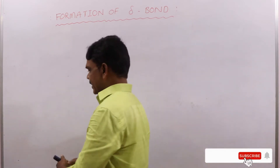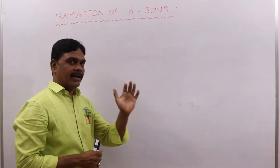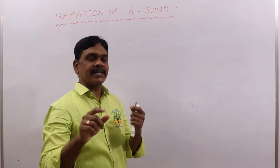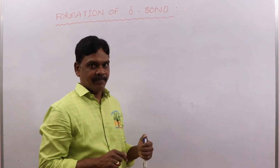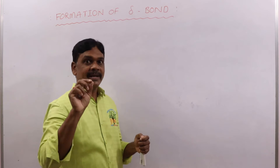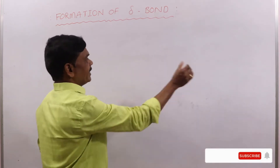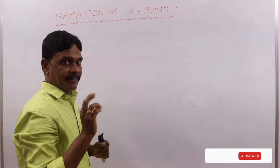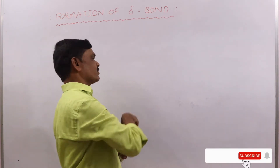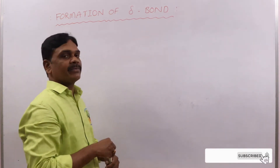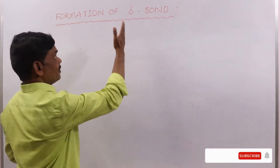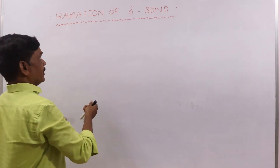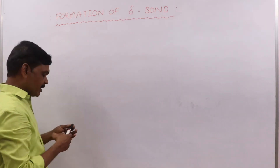So now in case of delta bond, it is a special type of bond. Only d orbitals — except the dz² orbital — can form delta bond. The remaining d orbitals: dxy, dyz, dzx, and dx²−y² orbitals can form delta bond.